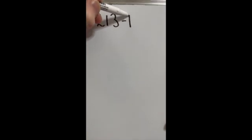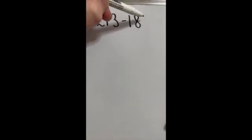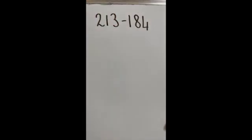I'm now going to show you an example where you may get confused. We're going to start with 213 and take away 184. The number that comes first goes at the top, and I'm taking away 184, so that goes underneath.